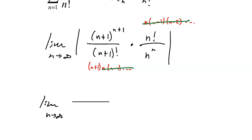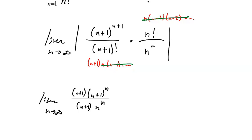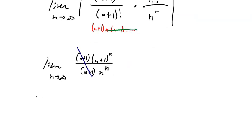After simplification, the (n+1) factors cancel, and since both the numerator and denominator have the same base raised to the n power, I can write them as a single fraction: ((n+1)/n)^n. This is actually a definition of Euler's constant — that limit equals e, which you learned back in pre-calculus.